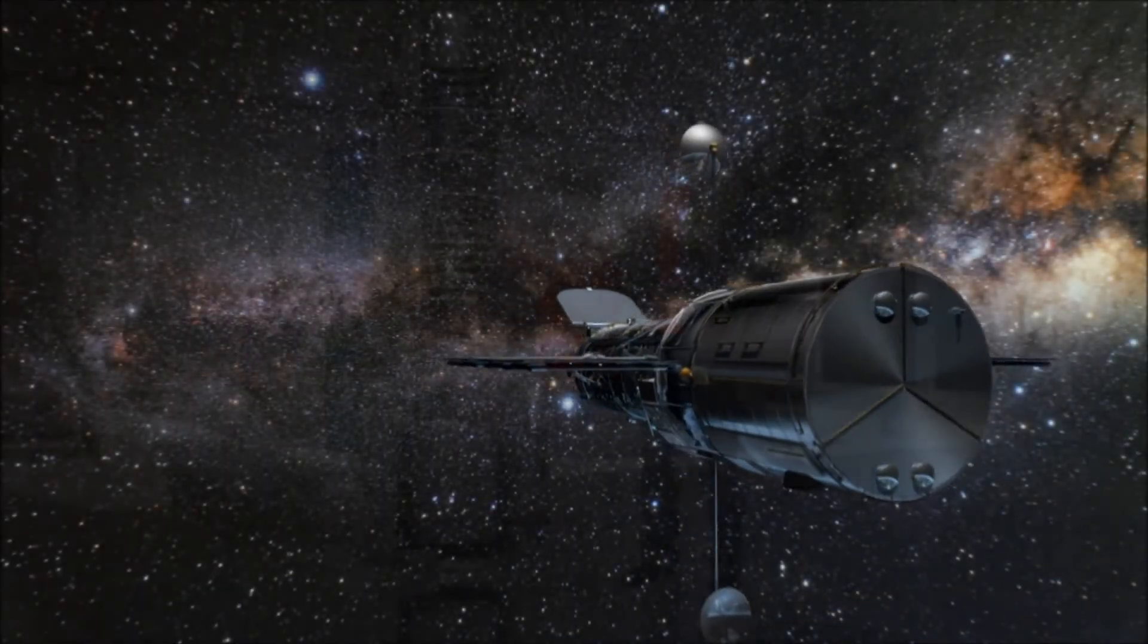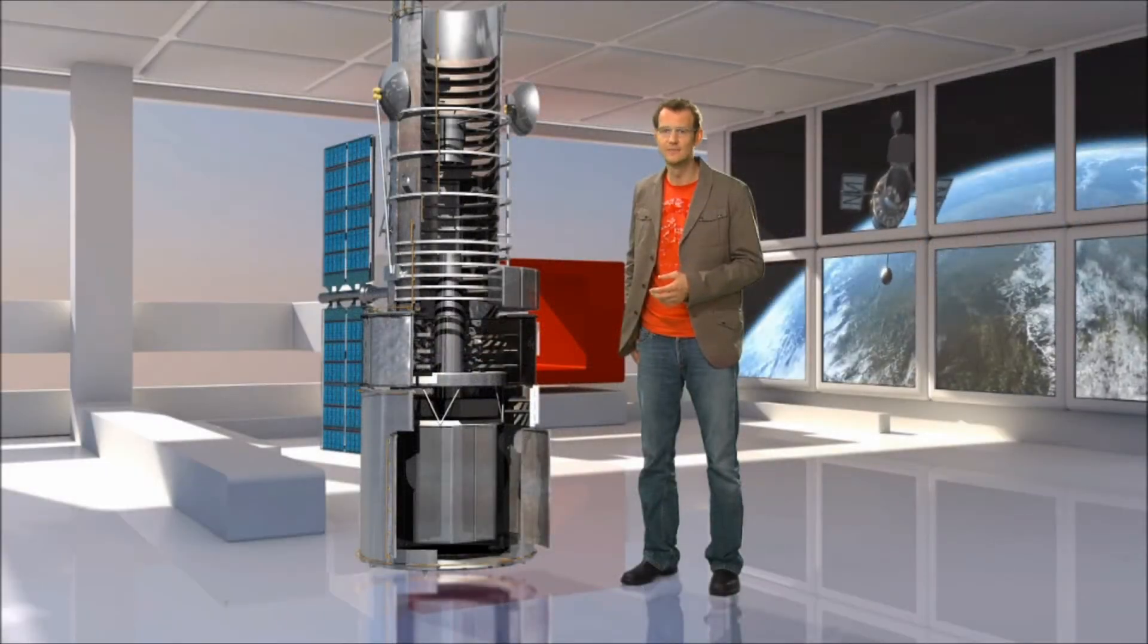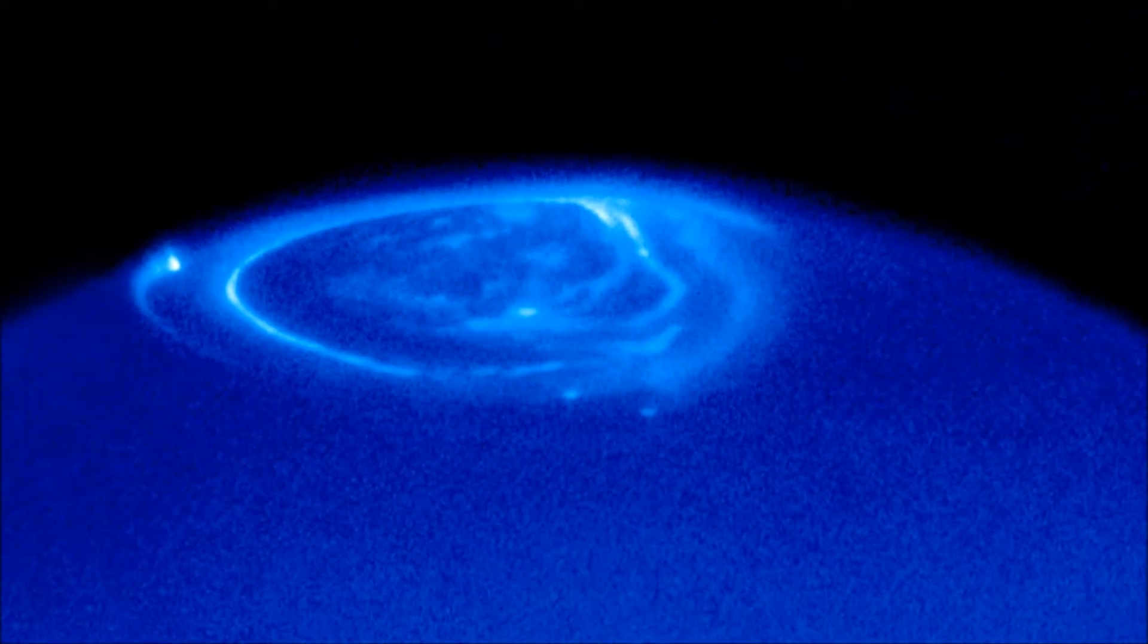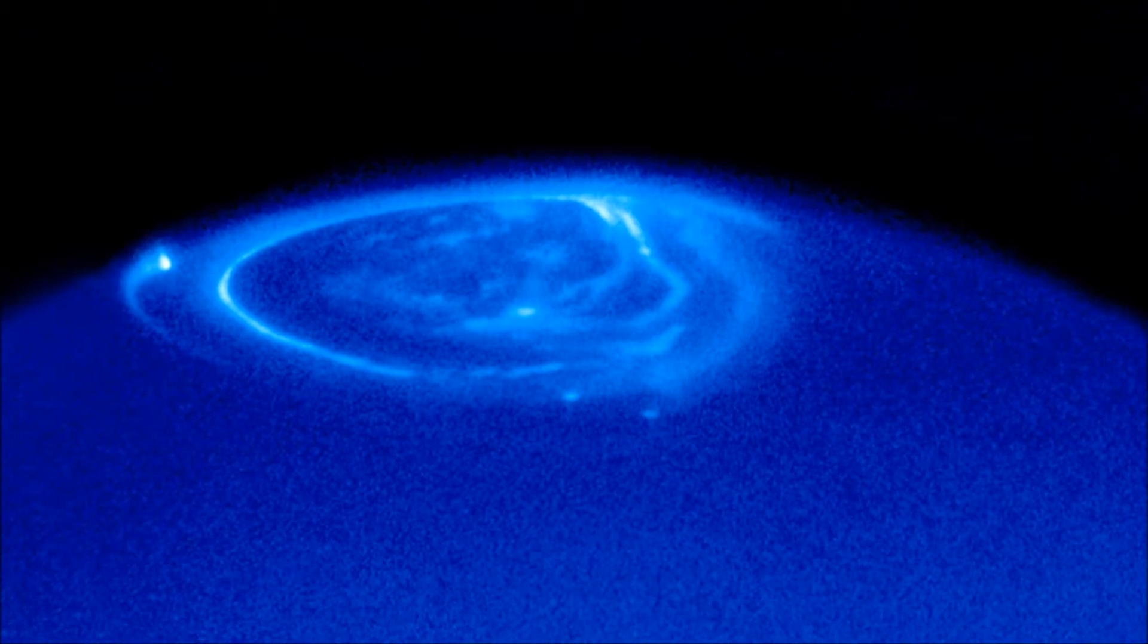What's more, Hubble can see ultraviolet and near-infrared light. This light just cannot be seen by ground-based telescopes because it is blocked by the atmosphere.